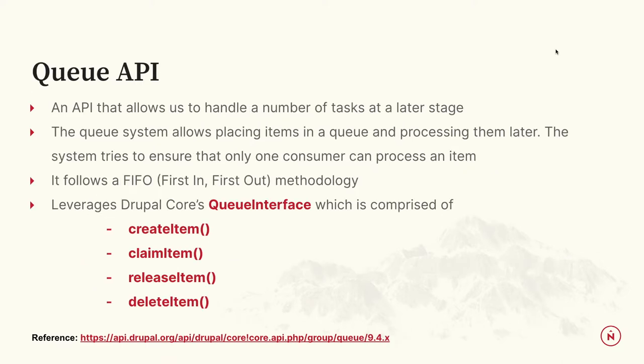And then there's also the Queue API. This allows you to handle a number of tasks at a later stage — you can make a bunch of queue items and process them whenever you want; it doesn't have to be right away. It follows a first-in, first-out methodology, which is nice.